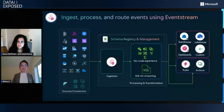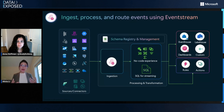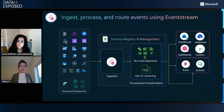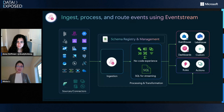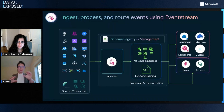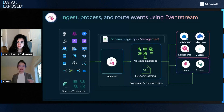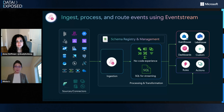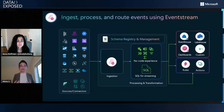For the ingestion part, we built native low-latency scalable connectors. A rich set of connectors can help you grab data from the outside world, including Azure Event Hub, IoT Hub, Apache Kafka, Confluent Kafka, Amazon MSK, Google Pub/Sub, and CDC from various different databases. Once data lands in event stream, you have two modes. One we call no-code, where predefined operators let you do filtering, joins, field changes, aggregation, etc. We also provide a SQL mode so you can write your own queries to express your business logic and manipulate data the way you want.